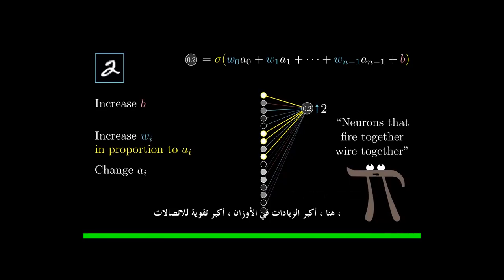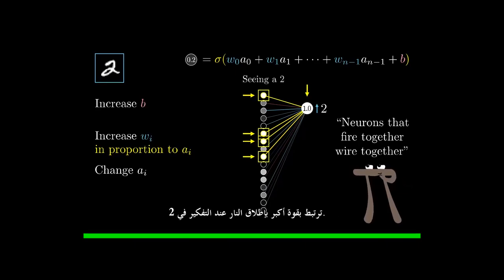Here, the biggest increases to weights, the biggest strengthening of connections, happens between neurons which are the most active, and the ones which we wish to become more active. In a sense, the neurons that are firing while seeing a two get more strongly linked to those firing when thinking about a two.